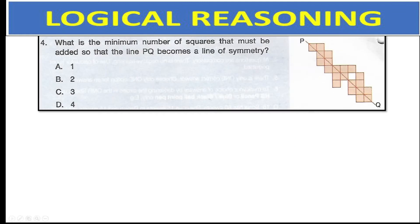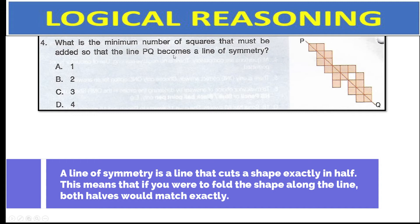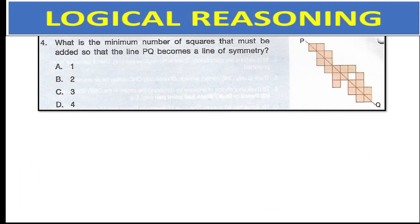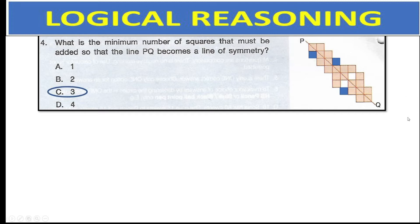What is the minimum number of squares that must be added so that line PQ becomes a line of symmetry? A line of symmetry means both images on either side of the line are identical. Going through each square: the first is symmetrical, the second needs one more square added, and checking further — there is one square here needing one more on this side, and one more here. To make line PQ a line of symmetry, we need 3 squares — option C.